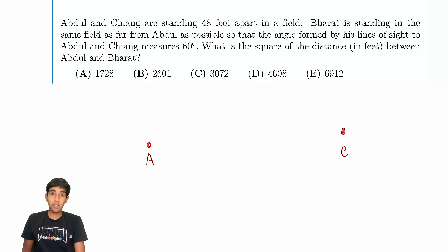Bharat is standing in the same field as far from Abdul as possible so that the angle formed by the lines of sight to Abdul and Chang is 60 degrees.